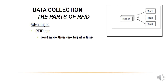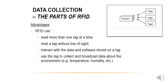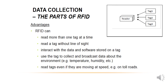The advantages of RFID include: you can read a large number of tags simultaneously — for example, a whole box of products each with an RFID tag can be read at once. You can read a tag even if it's not in line of sight, meaning something can be obstructing the path between the tag and the reader. You can interact with data and software stored on the tag, and use the tag to collect environmental data such as temperature and humidity. You can also read tags while they are moving, for example on toll roads.